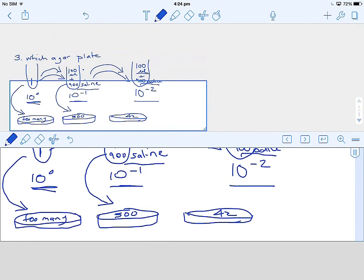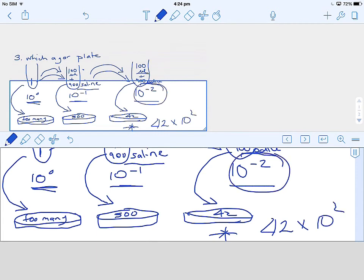If we look at our next agar plate, it was 100 microliters from the 10 to the minus 2 dilution, and we had 42 colonies. So this is the best agar plate to choose to form our basis for calculation. Here we have 42 colonies from the 10 to the minus 2 dilution.